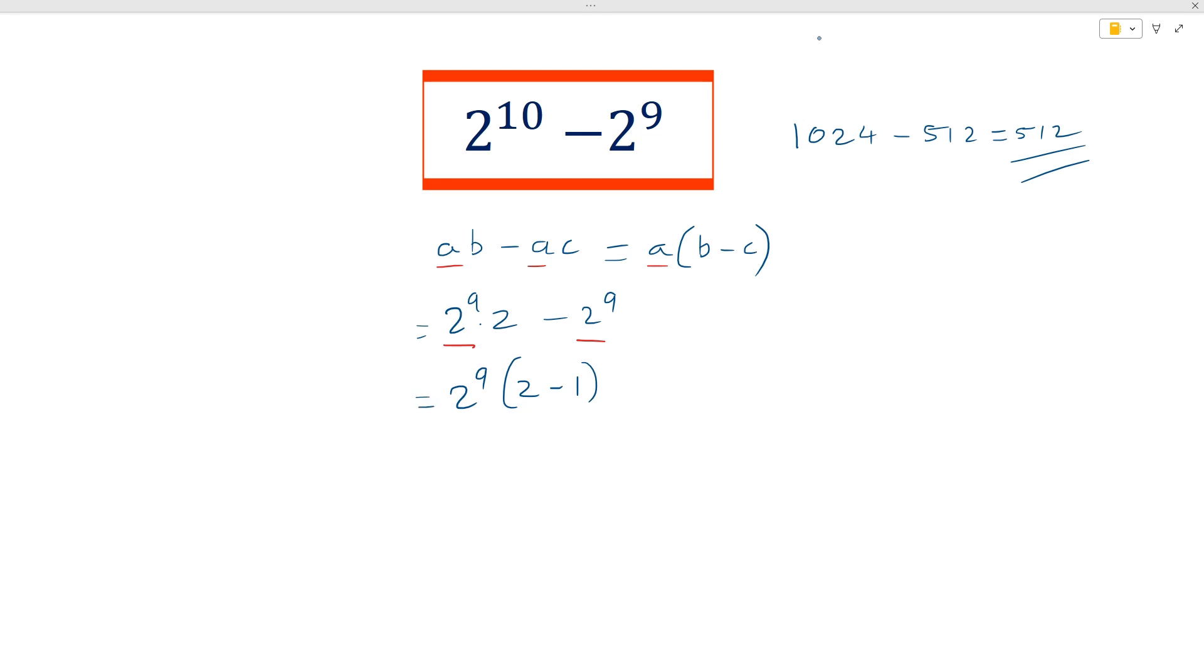So once we've taken these steps here, we can say that this is equal to 2 to the power 9 times 1, which is just 2 to the power 9.